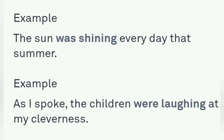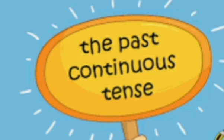Important point: children, I have used 'was' in the first example. Second example: as I spoke, the children were laughing at my cleverness. The other word I have used specifically is 'were.' So, we use 'was' and 'were' in past continuous tense.